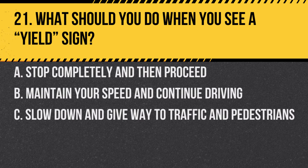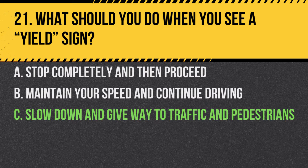Question 21. What should you do when you see a yield sign? a. Stop completely and then proceed. b. Maintain your speed and continue driving. c. Slow down and give way to traffic and pedestrians. Answer: c. Slow down and give way to traffic and pedestrians. A yield sign requires you to let others go first if necessary.